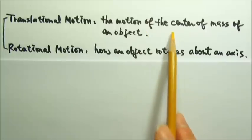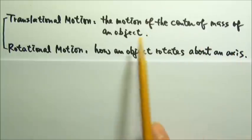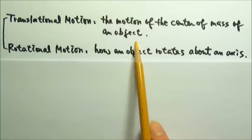Translational motion is the motion of the center of mass of an object. For example, if I throw this cardboard like a projectile, it would follow a parabolic trajectory. If there is no rotation involved, then every point on the dolphin would follow a parabola as it goes.